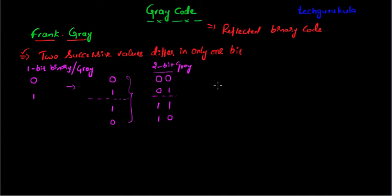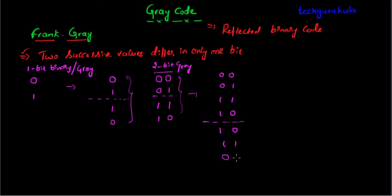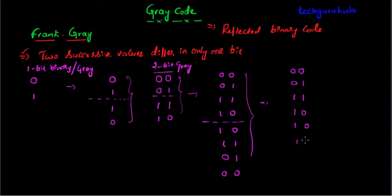Now, how do we make the three-bit grey code? Same procedure. Take these values and rewrite them: 0, 0, 0, 1, 1, 1, 0. Then take the mirror image of this: we get 1, 0, 1, 1, 0, 1, 0, 0. Take all these values together, and for the first half of them place 0 as the MSB. For the second half, make the MSB ones. This makes our three-bit grey code.